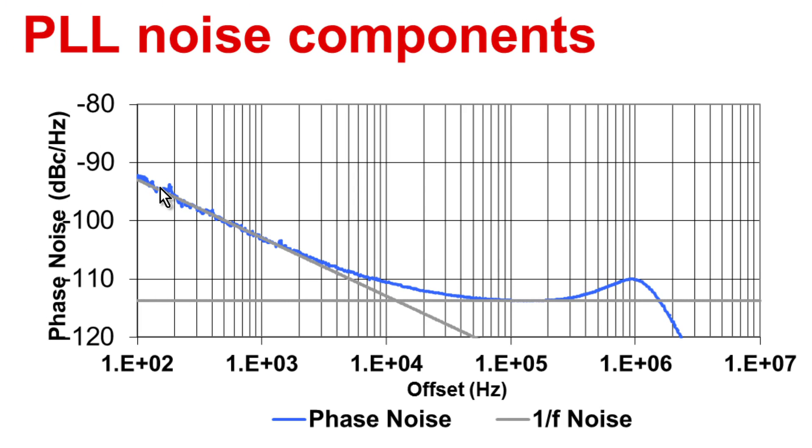In this example, we see here's the flicker noise changing at 10 dB per decade. And then it hits a flat noise, and these two add together. And then past the loop bandwidth, it gets shaped by this transfer function.